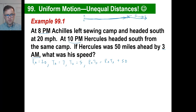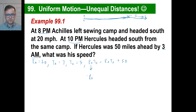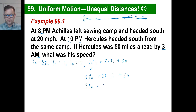We've got four unknowns in that equation but three of them we already know, so we can find the rate of Hercules. Rate of Hercules times five equals rate of Achilles, which is 20, times time of Achilles, which is seven. So five times the rate of Hercules equals 20 times 7 is 140, plus 50 is 190. Five into 19 is 3 with 4 left over, five into 40 is 8. So the rate of Hercules is 38.